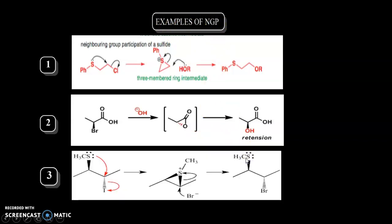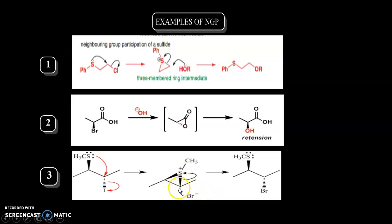Now consider another example. Here also, iodide is the leaving group. Sulfur attacks on this carbon from the back side because iodine is the leaving group and iodine goes away. There is formation of the intermediate. In the next step, external nucleophile Br⁻ attacks on this carbon to form the product. Here also there is retention of stereochemistry. So these three examples are very important to understand neighboring group participation.